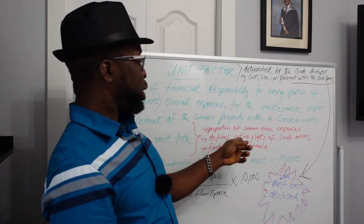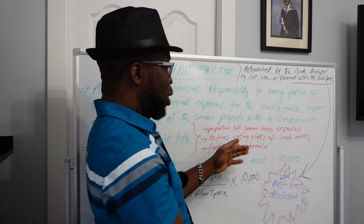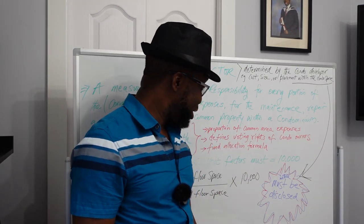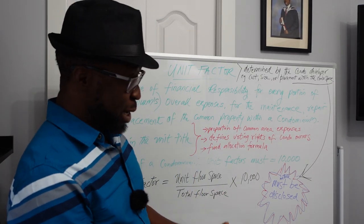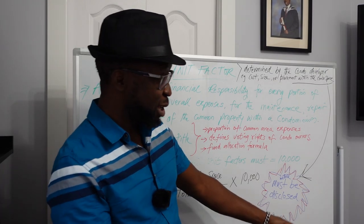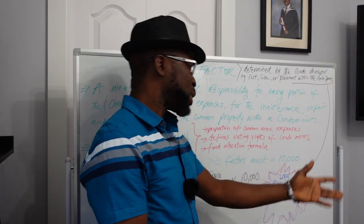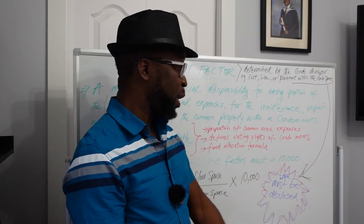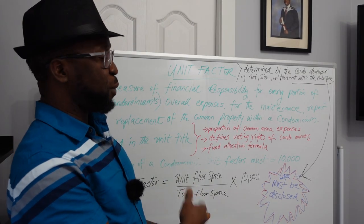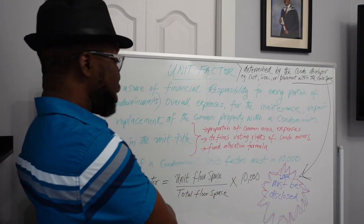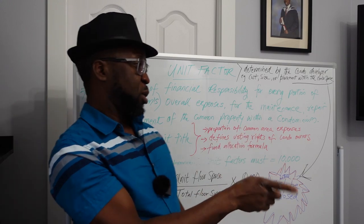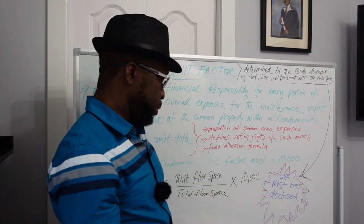When determining the proportion of common area expenses, if there is any expense to be made in the common area — maybe beautifying the outside, planting flowers, whatever they are doing — the expense, if you want to divide it, you use the unit factor to know what each condominium unit is going to pay.